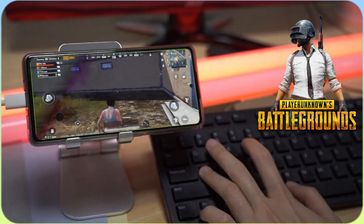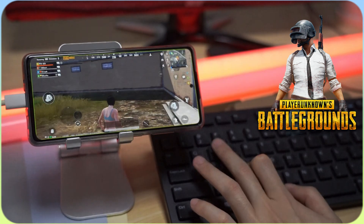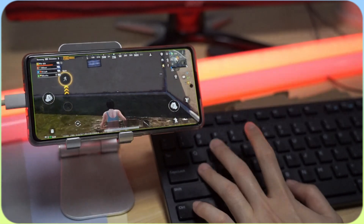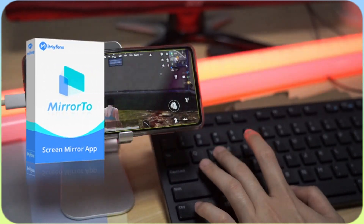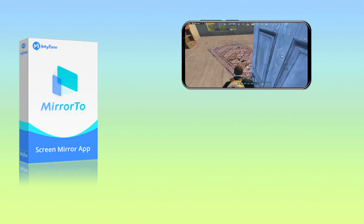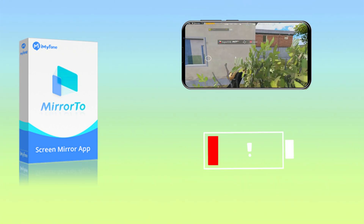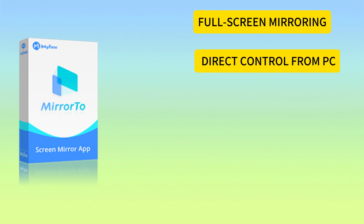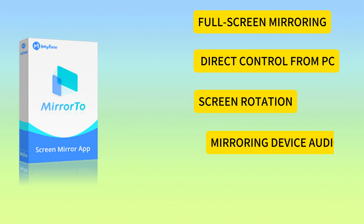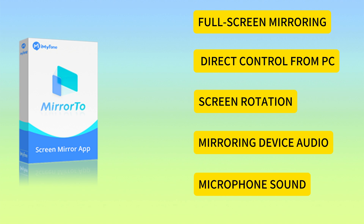Mirror to allows you to control the mobile screen from your PC using a mouse and keyboard. With Mirror to, you don't have to stare at the small screen of your phone all day long while keeping an eye on the battery. Whether it's full-screen mirroring, direct control from PC, screen rotation, or mirroring device audio and microphone sound, you can fully enjoy the better experience brought by mirroring your phone to your PC.